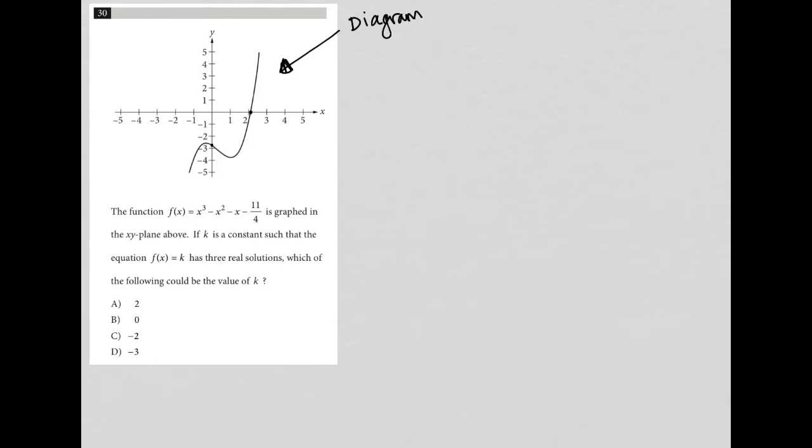So it says the function, so I like to write down equations when I see them. So f(x) = x³ - x² - x - 11/4 is graphed in the xy plane above. So the shape of this graph is controlled by this function here.